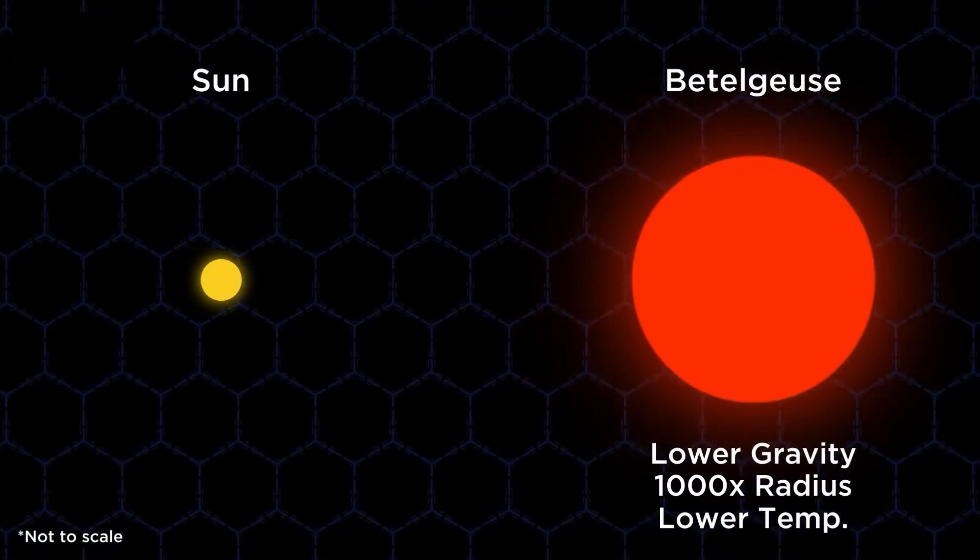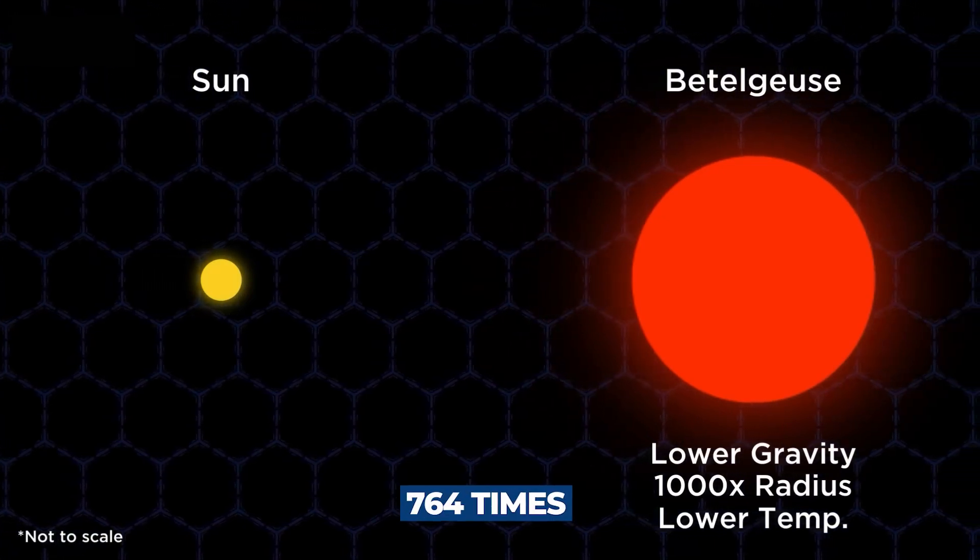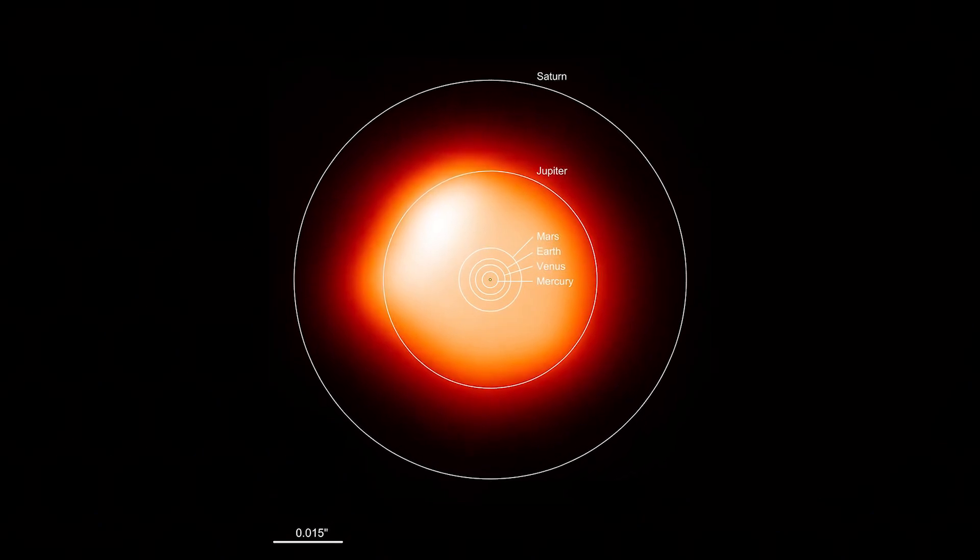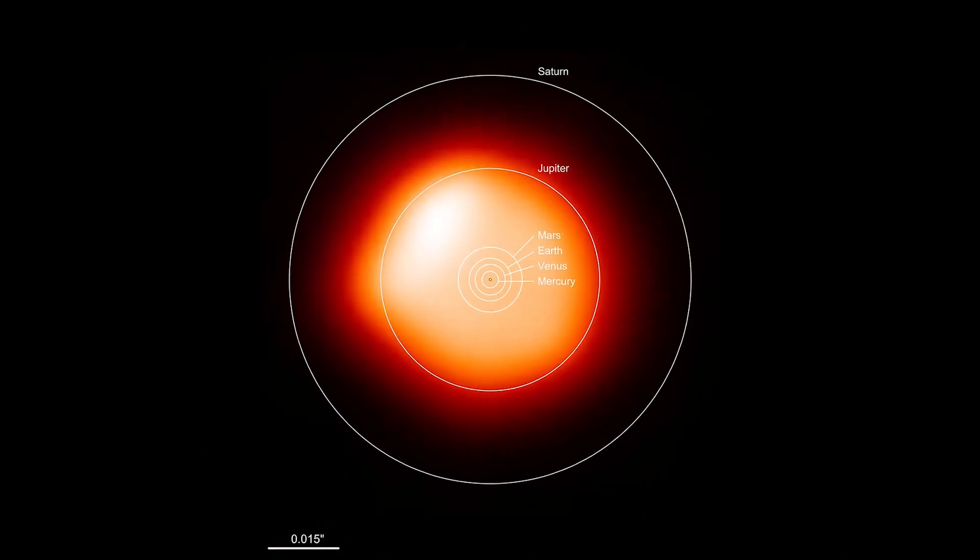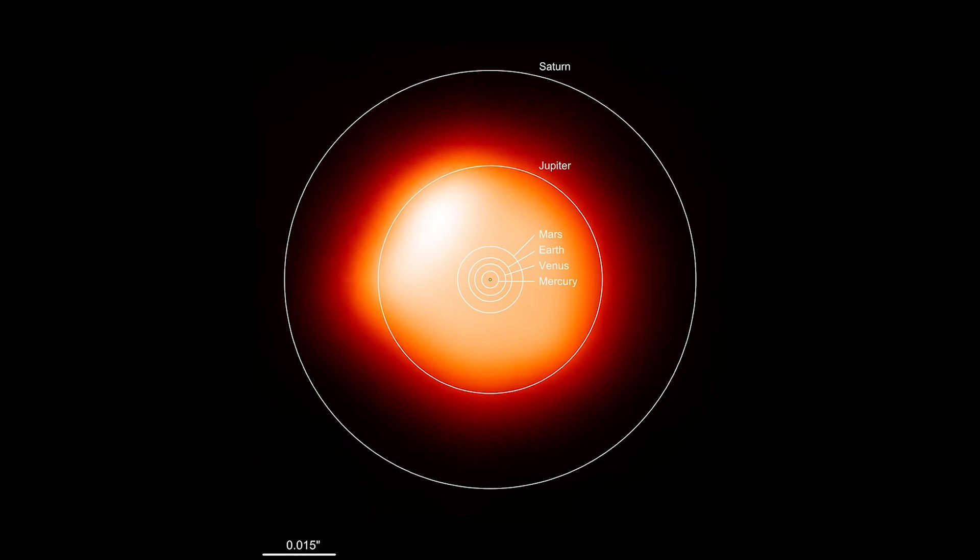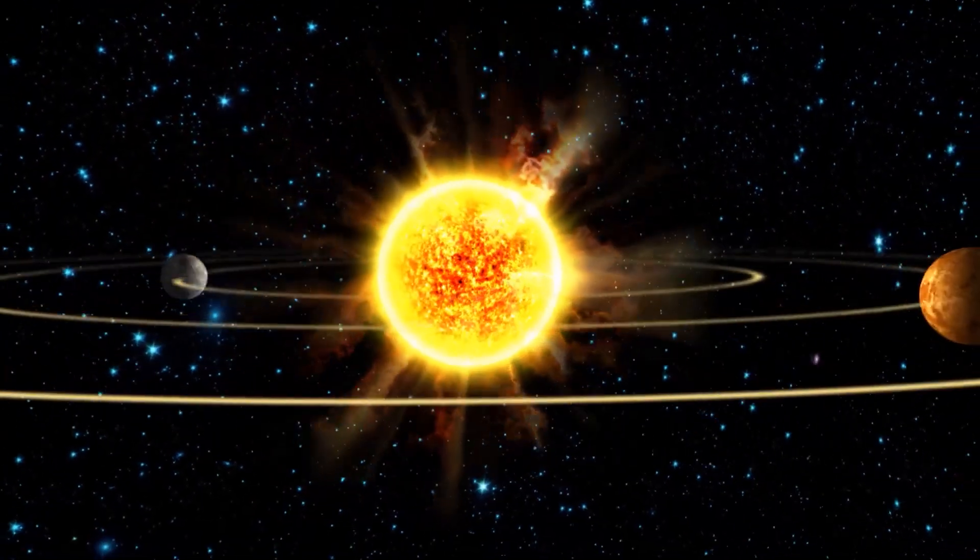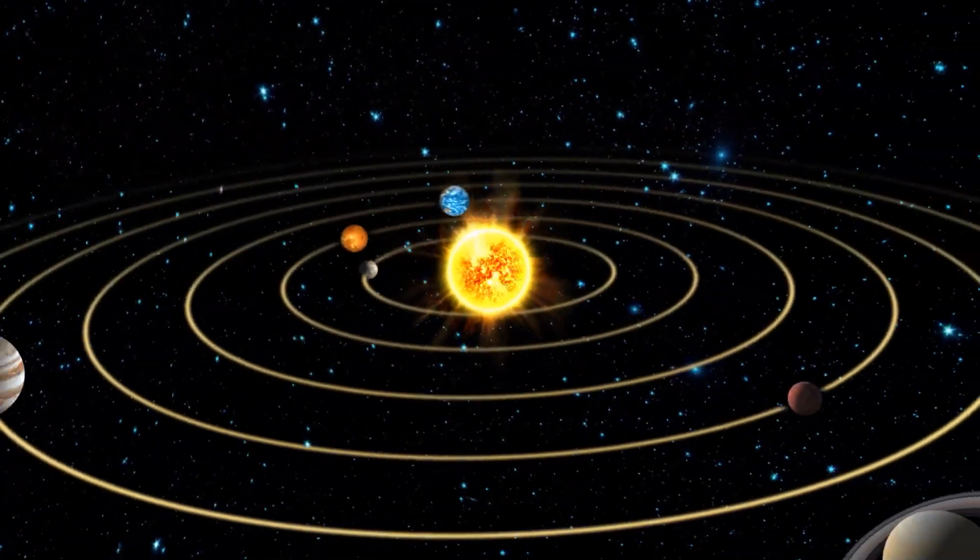Betelgeuse has a radius that is approximately 764 times that of our Sun. If this star were to replace our Sun in the solar system, it might extend beyond the asteroid belt and even Jupiter. This means that Earth, Mars, Mercury and Venus would be completely absorbed.